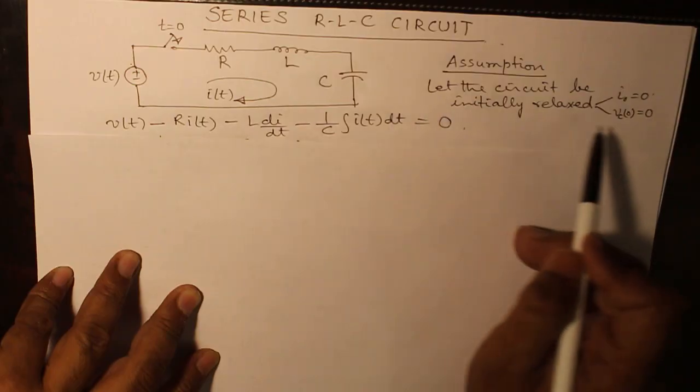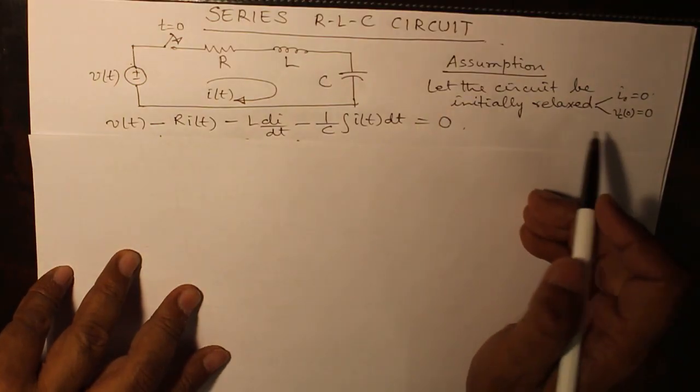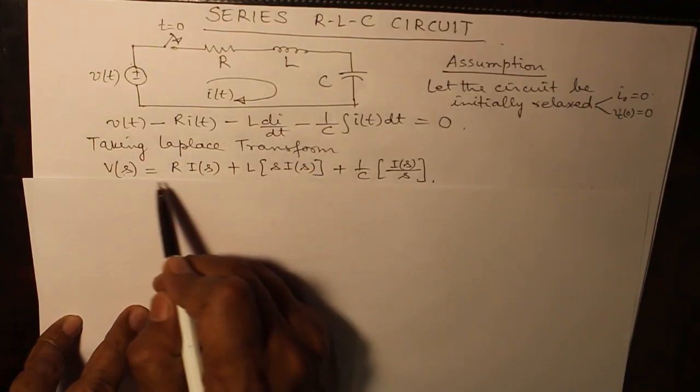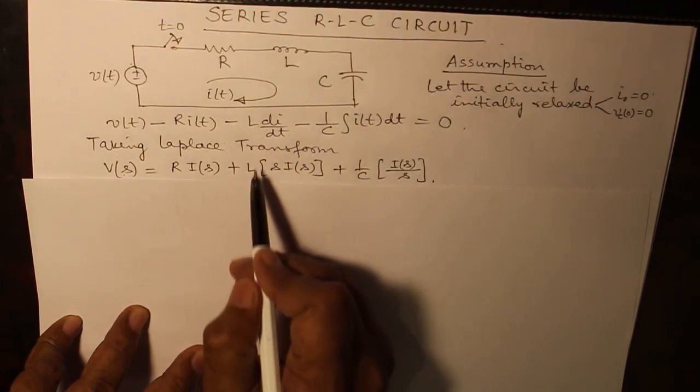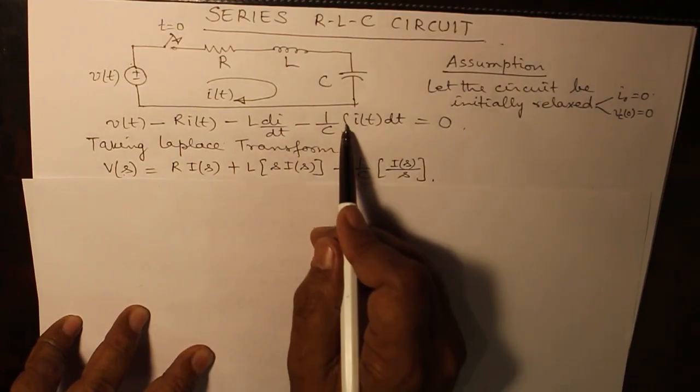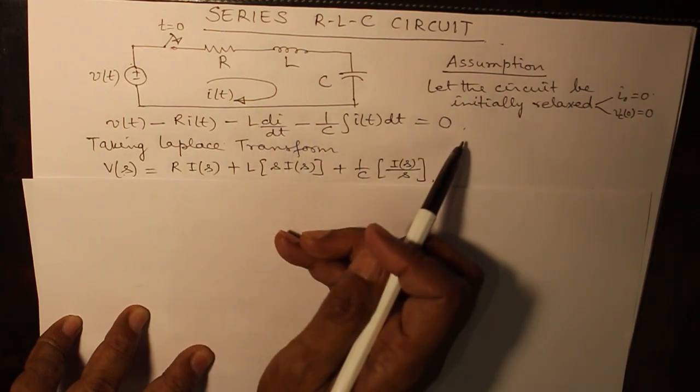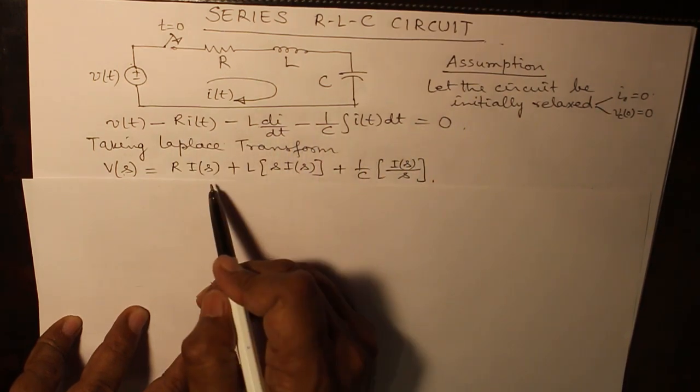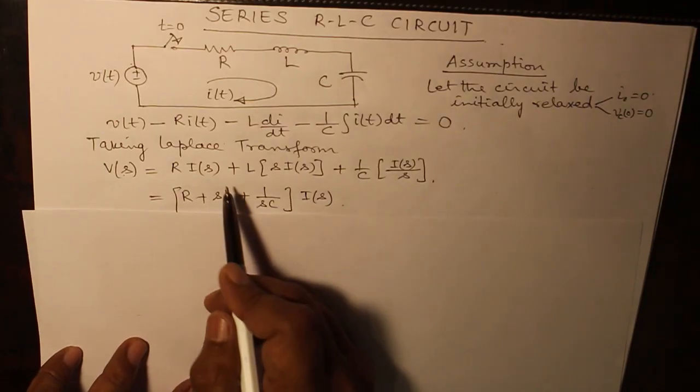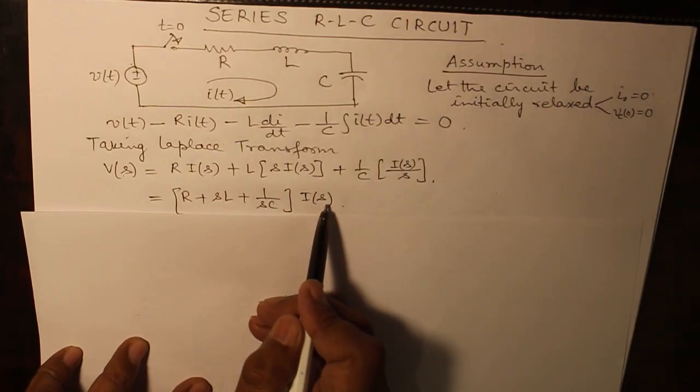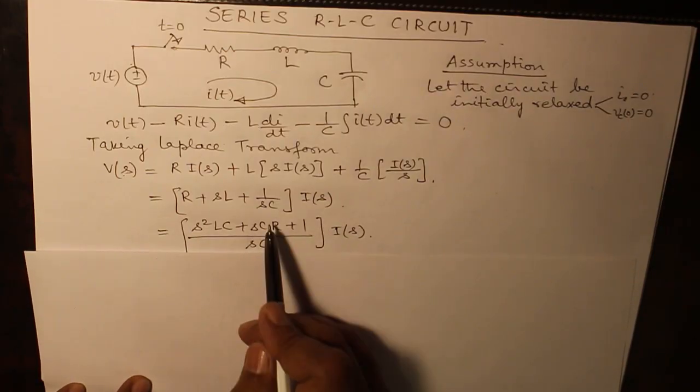So taking Laplace transform now, we obtain V(s) equals R*I(s) plus L*s*I(s) plus 1 over C*I(s) over s. All of these quantities have become plus because it has gone on in the right hand side.